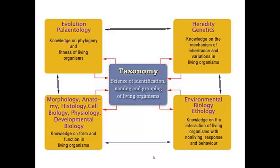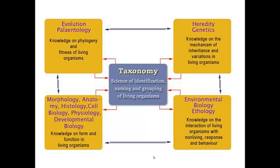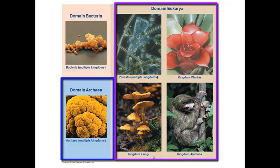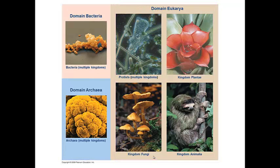So let's start with the largest taxonomic category, which is the domain. And all of life is divided into three domains. Domain bacteria, domain archaea, and domain eukarya. And from the figure here, you can see some representative organisms.